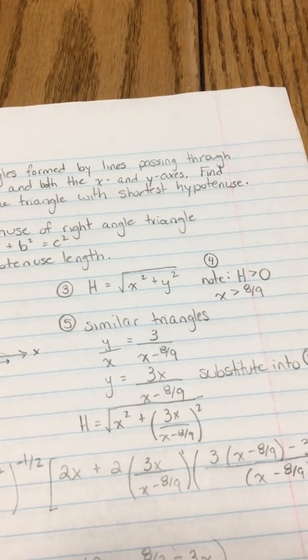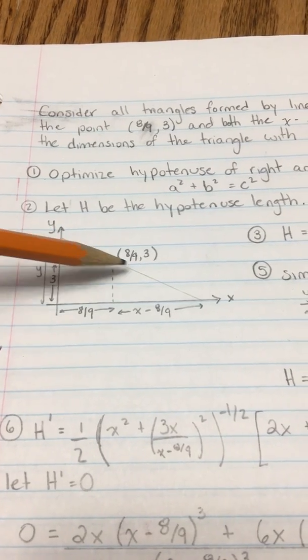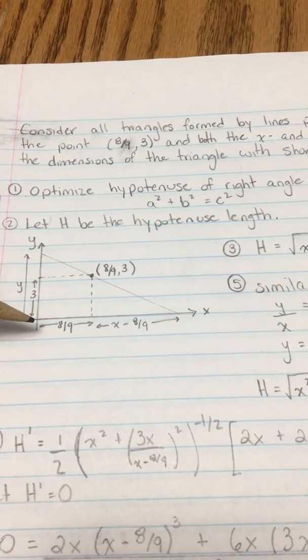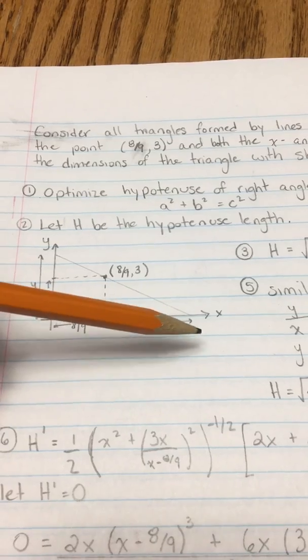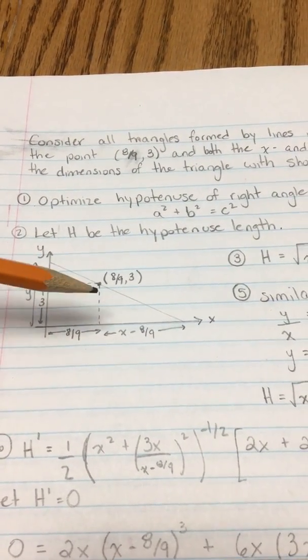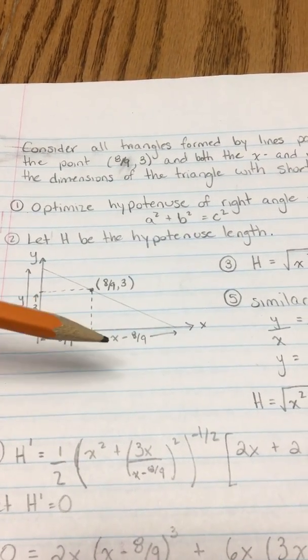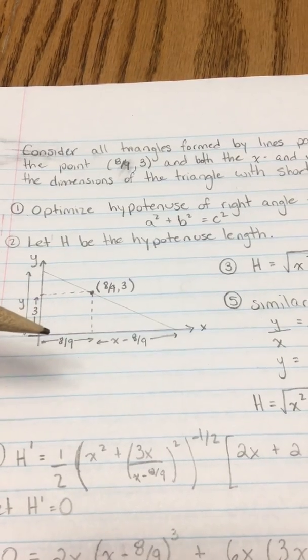In order to solve this problem we're going to use similar triangles. In our diagram here we have a large triangle that has height y and base x, and then we have a smaller triangle where the height is 3 and the base is x - 8/9.